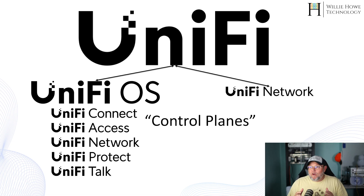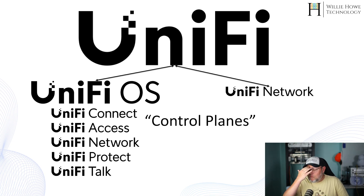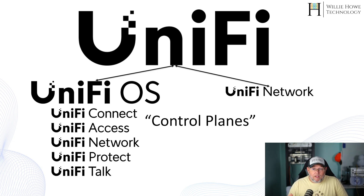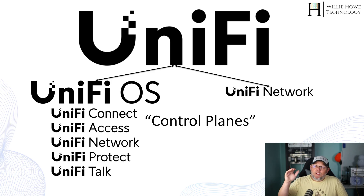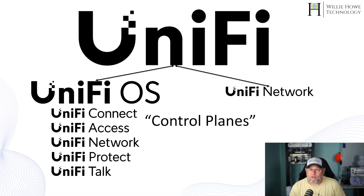From a high-level overview, I've broken it down into UniFi OS and then UniFi Network. The reason I did that is because UniFi Network is actually the only piece of Ubiquiti software that you don't have to run on a UniFi console or a UniFi cloud gateway. Your UniFi consoles are your NVR series and your Cloud Key devices. And even though they're running UniFi OS, they don't run UniFi Network. Under UniFi OS — which is a proprietary operating system that Ubiquiti has designed, I think it may be based on Debian or Ubuntu — we have UniFi Connect, UniFi Access, UniFi Network, UniFi Protect, and UniFi Talk.